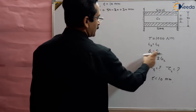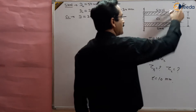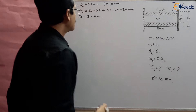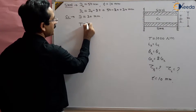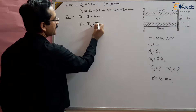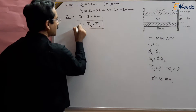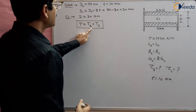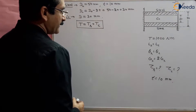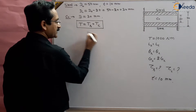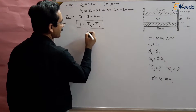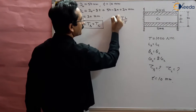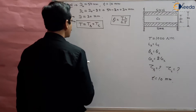The angle of twist is the same in both materials. The torque applied will be shared by steel and copper based on their material properties. So the total torque T equals T_steel plus T_copper, because it is a parallel combination. Theta is given by the formula theta = TL / GJ. This is the formula for the angle of twist.